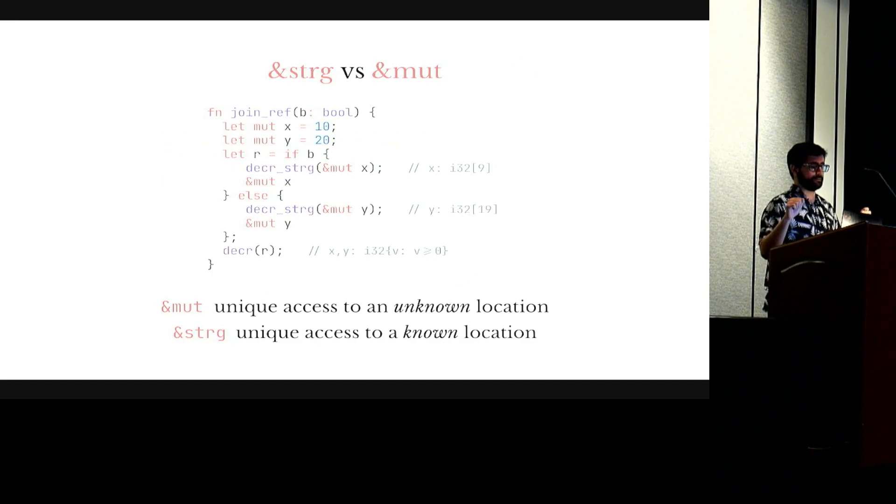In my experience this is where people get confused when I'm explaining this. So I'm going to try to explain the difference between strong and mutable reference a bit more clearly. So in this example I'm declaring two local variables X and Y. And based on some condition I'm taking a reference to either X or Y and storing the result in R. So in each branch, before the branches join, Flux knows exactly if I take a reference to X or Y. Flux knows exactly the location I'm pointing to. So I can do a strong update on it.